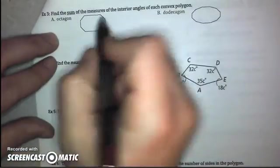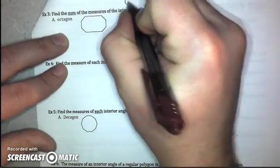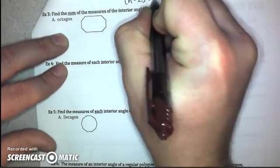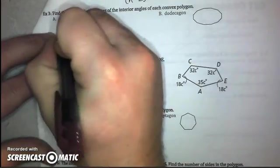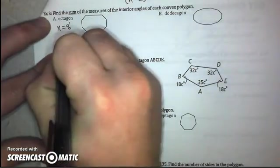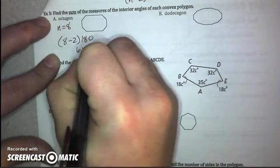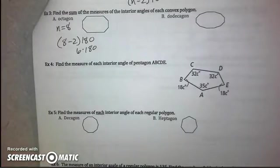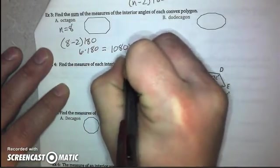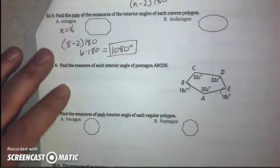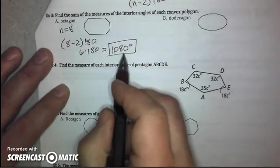So, to find the sum of the measures of each of the interior angles in both of these polygons, we're again using this formula, which a lot of you had already figured out. So, in an octagon, n equals eight. So, we do eight minus two times 180, which is six times 180, which gives you 1,080 degrees. So, the sum of all eight of those angles would have to equal 1,080 degrees.